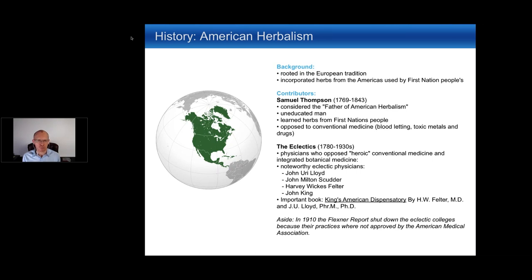Thompson was opposed to the harsh conventional approach, so by speaking with indigenous people he learned about a number of herbs. He compiled this knowledge and created herbal patents that he would sell — he was also a businessman who made money from it. The knowledge he acquired came from First Nations people, who don't often get credited, but that's where most of his information originated.